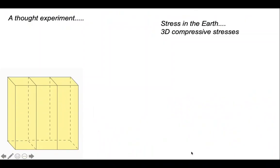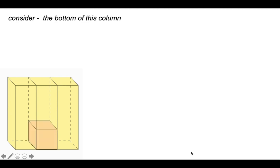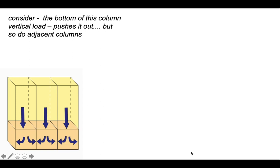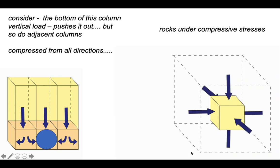Let's think a little bit about stress in the earth. Imagine a column of rock and a cube of rock at the bottom of it. The stress acting on this unit cube is primarily coming from the vertical load of rocks on top. You might expect those rocks at the bottom to squeeze out sideways under that load, except for the fact that adjacent columns are doing the same thing to their cubes of rock at their bases. So this particular cube is being compressed in all directions. We can describe the stress state in terms of three orthogonal axes, and the rock is being loaded by entirely compressive stresses.